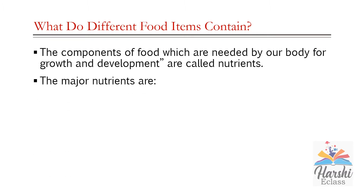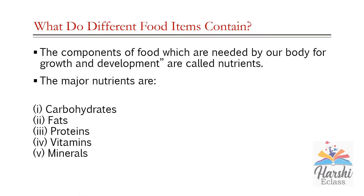The major nutrients are carbohydrates, fats, proteins, vitamins, and minerals. Carbohydrates and fats give us energy. Proteins help in development of the body. Vitamins and minerals protect us from diseases. In fact, fats give double the amount of energy compared to carbohydrates. Let's study in detail about these nutrients.